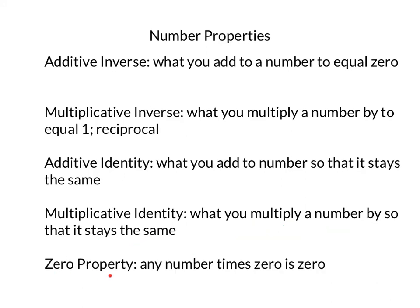And the zero property says that any number times 0 is 0. And most of us understand that. You know, 74 times 0 equals 0.